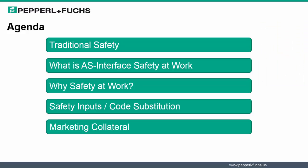Our agenda for this presentation has been broken down into the following list of topics. Before we can appreciate the value of safety at work, we need to look back at some of the challenges we face with traditional safety. In this webinar, we will discuss AS Interface Safety at work in some typical scenarios and how safety data can be transmitted in applications up to Category 4 or Safety Integrity Level SIL 3.